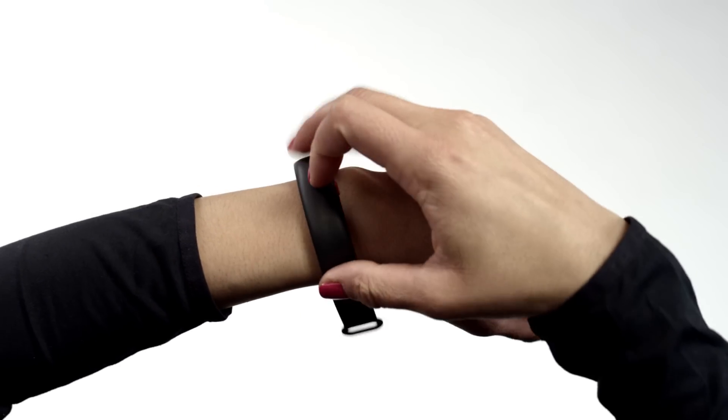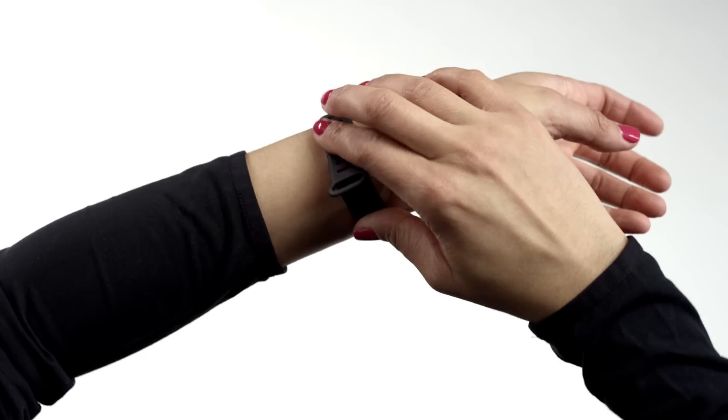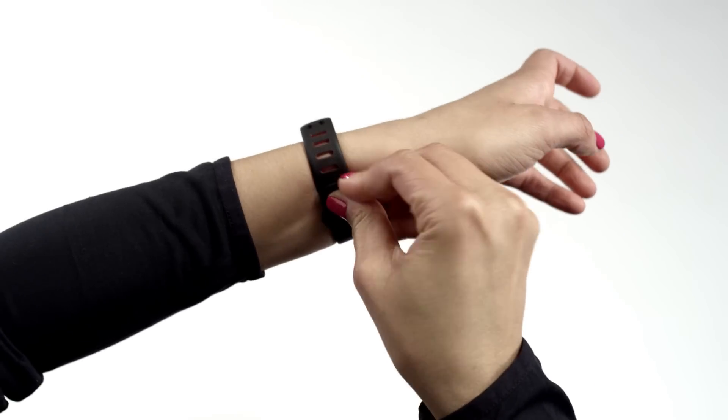Place the UA Band on your wrist and then insert the other end of the strap through the buckle. Adjust the strap until it fits snugly and fasten the clasp.